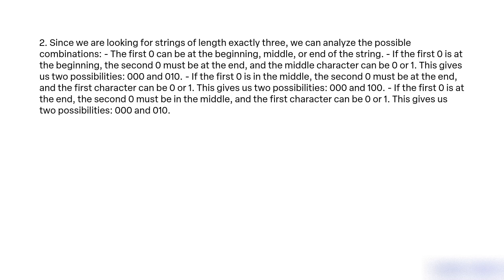If the first zero is in the middle, the second zero must be at the end and the first character can be 0 or 1. This gives us two possibilities: 000 and 100. If the first zero is at the end, the second zero must be in the middle and the first character can be 0 or 1. This gives us two possibilities: 000 and 100.